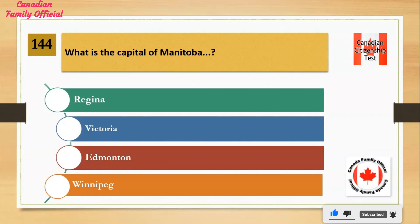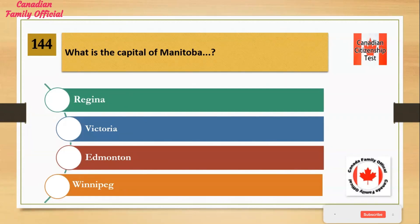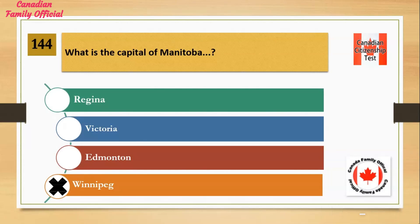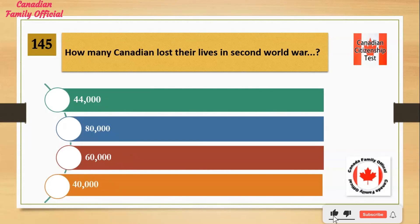What is the capital of Manitoba? Number 1: Regina. Number 2: Victoria. Number 3: Edmonton. Number 4: Winnipeg. And the answer is Winnipeg.